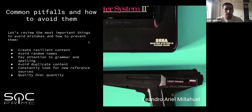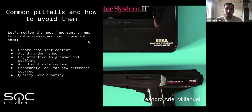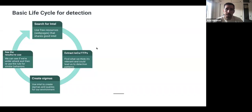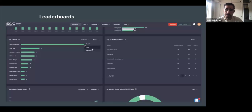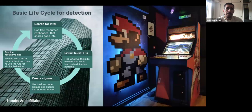Pay attention to grammar and spelling, avoid duplicated content, constantly look for new reference resources, and prioritize quality over quantity. It's better to send two or three rules that have really interesting content than to send 20 rules where maybe 10 or 11 of them get rejected for all the points we have discussed in this webinar.